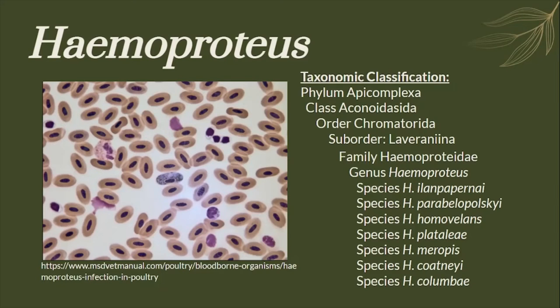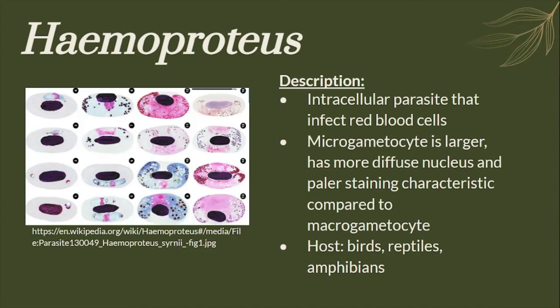Here is the taxonomic classification for the genus Hemoproteus. Hemoproteus are intracellular parasites that infect red blood cells. Their microgametocyte is larger and has a more diffuse nucleus and paler staining characteristics compared to the macrogametocyte. Their usual hosts are birds, reptiles, and amphibians.